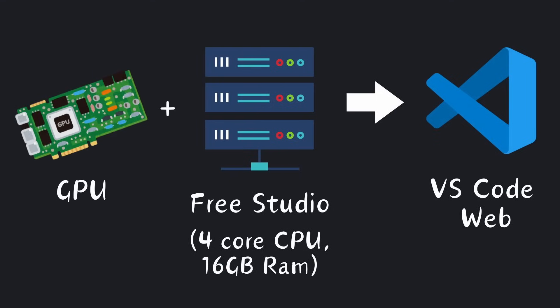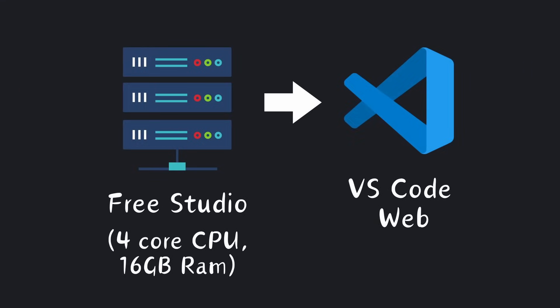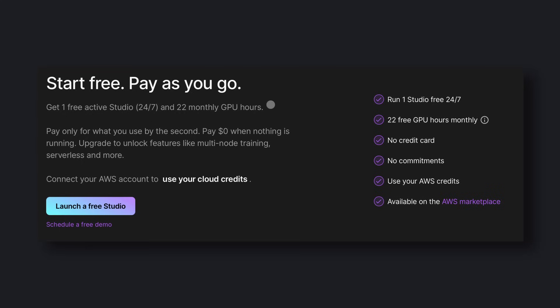But whenever you need to run a big LLM or a diffusion model, you can transform this VS Code instance into a GPU powerhouse by adding a GPU to the instance, which is seamless. And once your work with that GPU is done, you can detach it. On the free tier, you can only use the GPU for a total of 22 hours in a month.